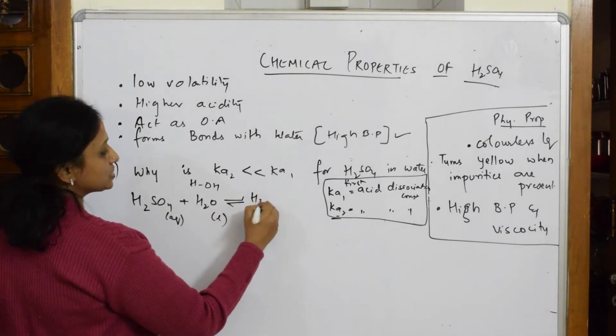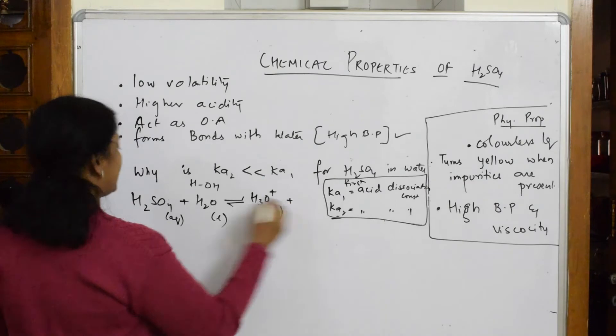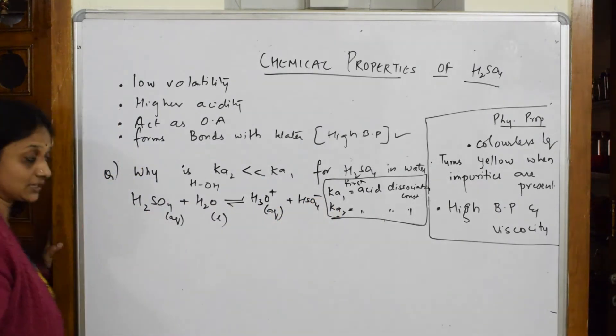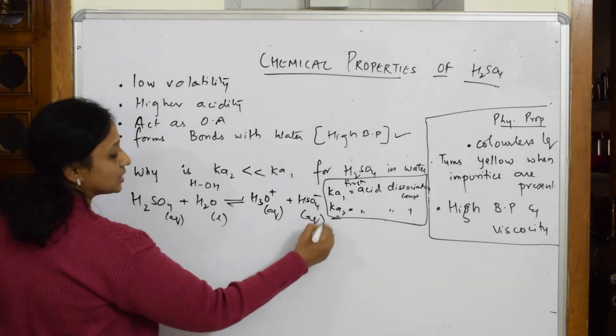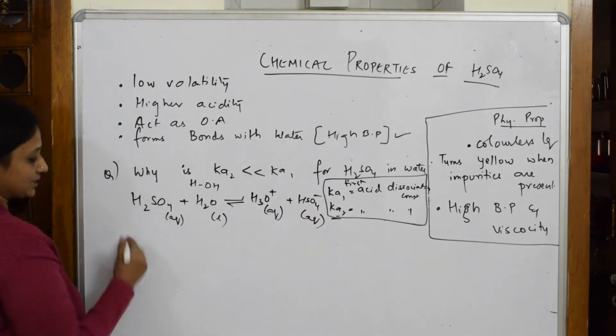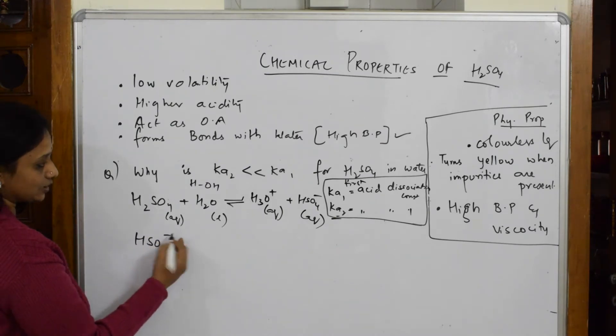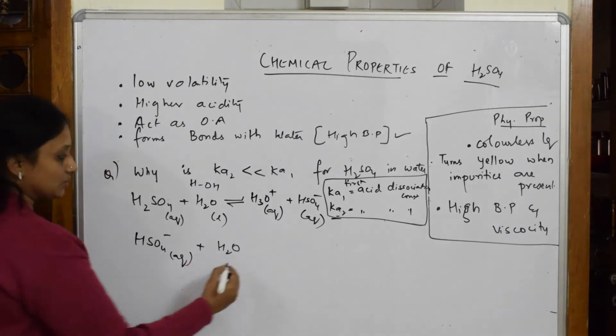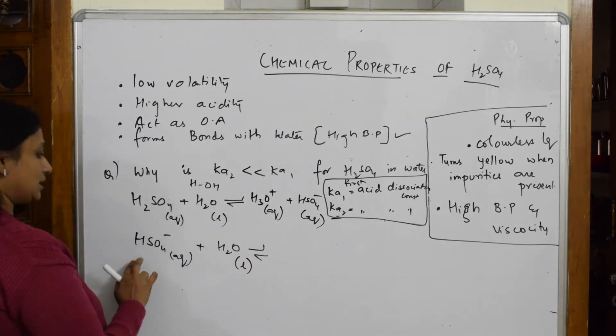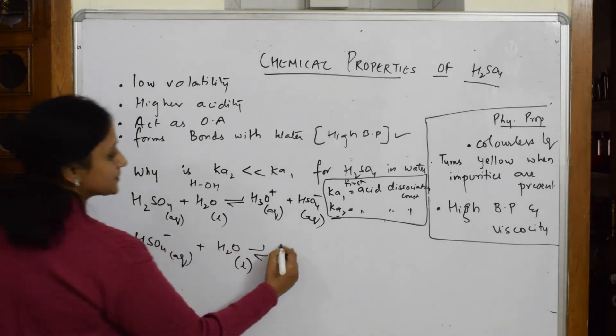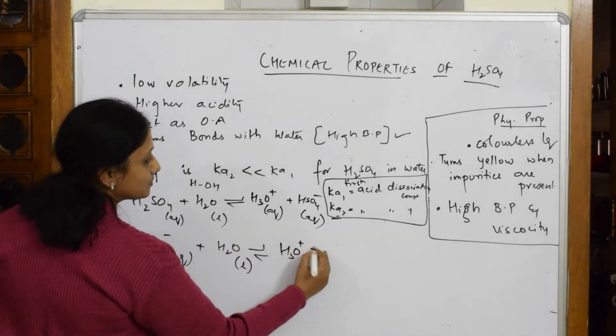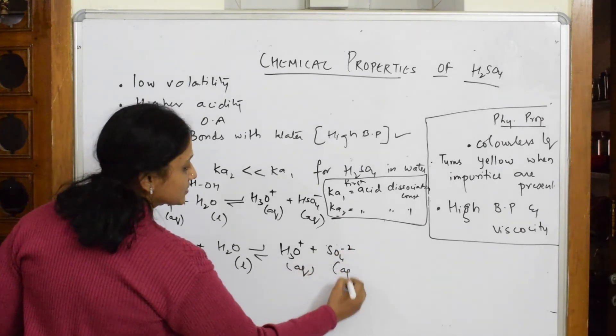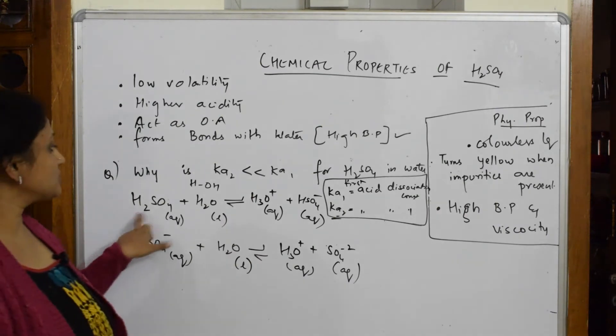You get HSO4- (bisulfate ion) in aqueous state. This HSO4- combines with water and you get H3O+ plus SO4^2-. This is also aqueous state. For the release of H+ in the first dissociation, the acid dissociation constant is denoted by Ka1.